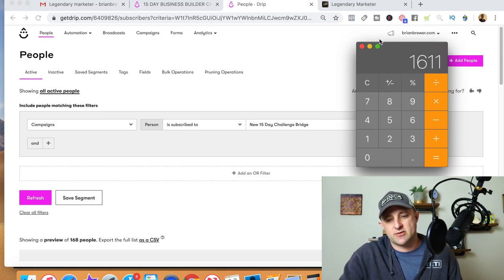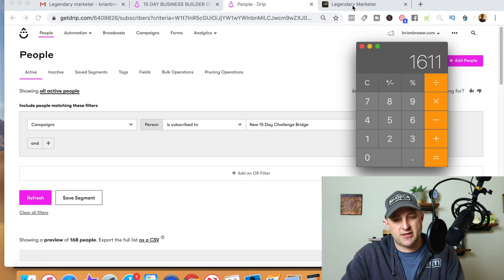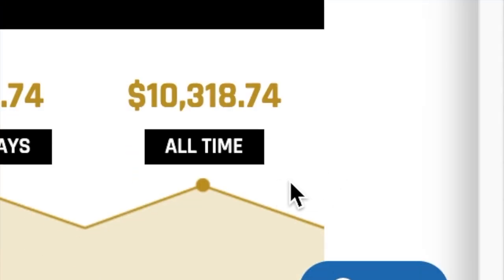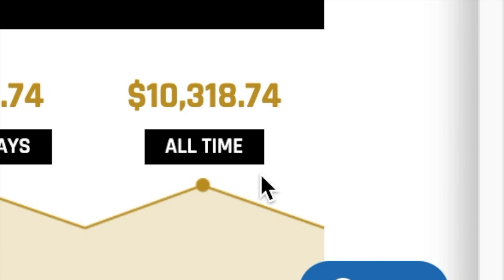Now we go over to the Legendary Marketer dashboard. Looking at the dashboard, you can see that all time I've earned just over $10,000. I recently leveled up to the gold rank. To be specific, since I started promoting Legendary Marketer, I've earned $10,318.74.